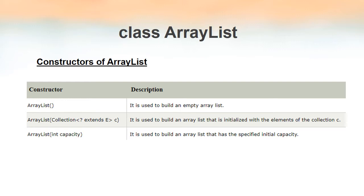To create an ArrayList we need to create objects of this class, and for creating objects we use constructors. There are three constructors for this class. The first constructor has no parameter — when used, it creates an empty ArrayList. The second constructor requires one parameter: an existing collection. If we already have a collection and want to create an ArrayList based on it, we use this second constructor.